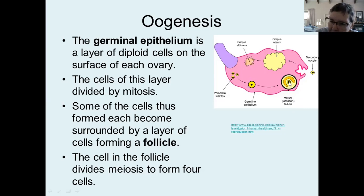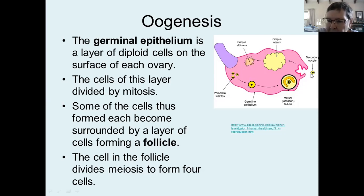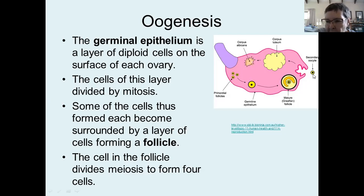At this point, the egg cell is ready to be fertilized. The Graafian follicle rises to the surface of the ovary, pushes against the wall, and bursts open, releasing the secondary oocyte — which still needs to undergo the second phase of meiosis. But I'm 100% fine with you calling this an egg cell and presuming that it is already mature and ready to be fertilized.